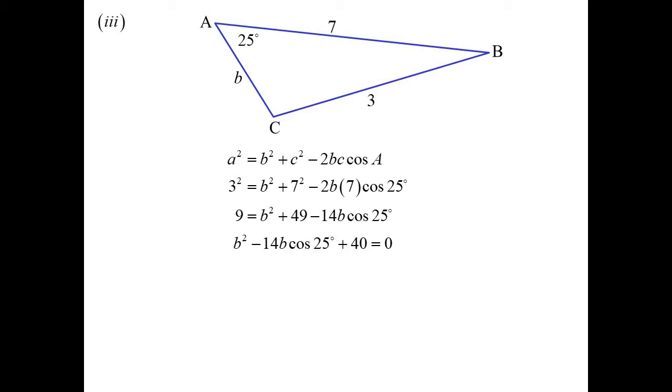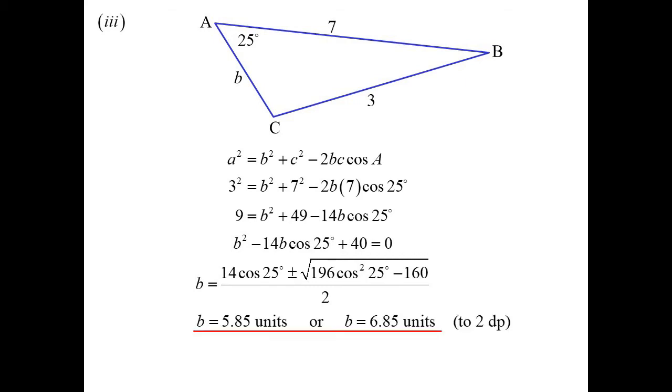There we go. I'll rewrite it. B squared minus 14B cos 25 plus 40 is equal to zero. So I know B will equal negative, well, negative negative becomes a positive. 14B cos 25 plus or minus the square root of B squared minus 4AC all over 2. I get two possibilities.